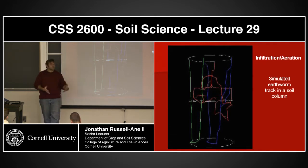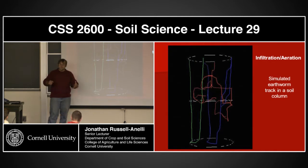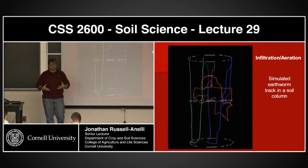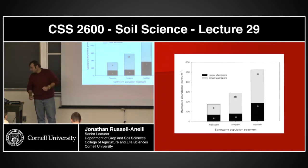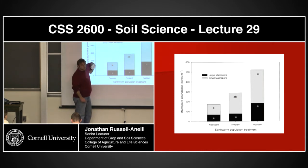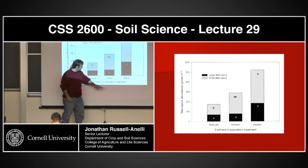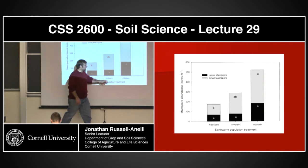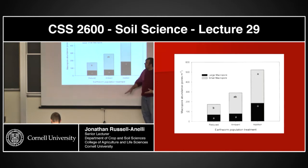What's the effect of that on nutrient cycling? We're moving materials, increasing the rates of materials coming in, and oxygenating the system. If we're oxygenating the system, we're increasing decomposition rates and respiration rates. Things are going to be driven a lot faster. An experiment looking at macro pore abundance — large versus small macro pores versus earthworm populations — shows that as earthworm populations increase, there's a dramatic increase in macro pores, with a smaller increase in micro pores.